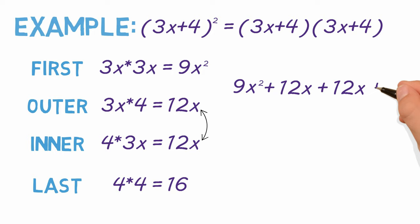Then combine like terms. And you should end up with 9x squared plus 24x plus 16.